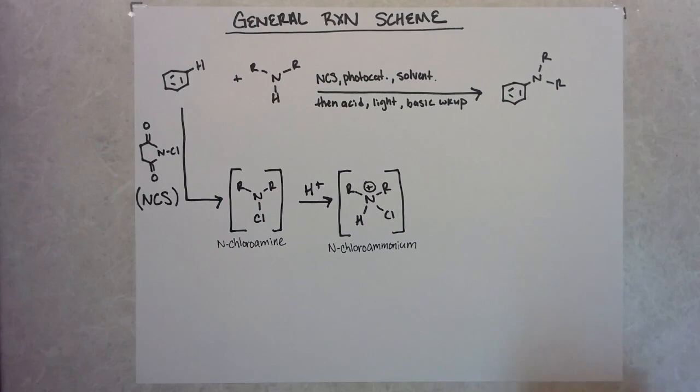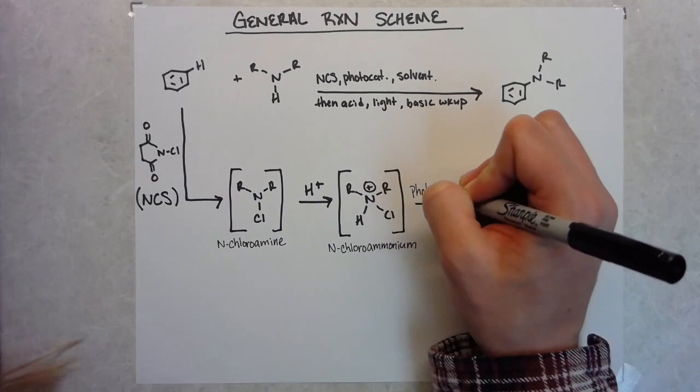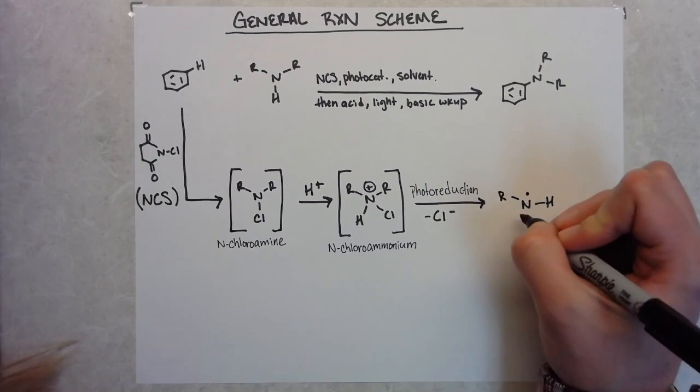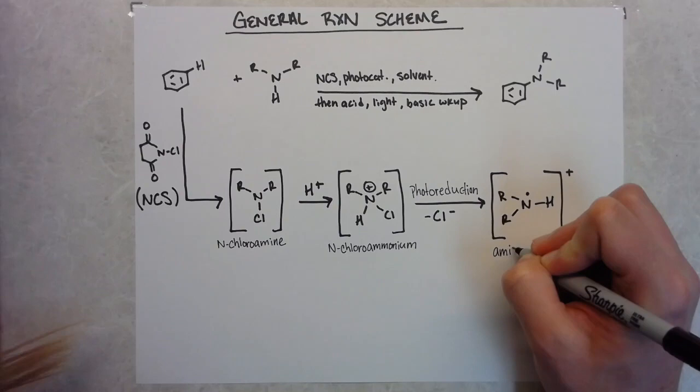Yeah. So in general, this reaction is taking an erine and basically making an arylamine. And I think before we get into the scope of the reaction, it would be helpful to look at previous reactions that are also kind of doing this transformation to kind of see where they're good and kind of also where they may fall short.